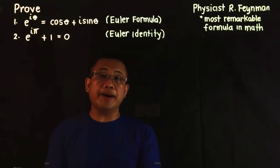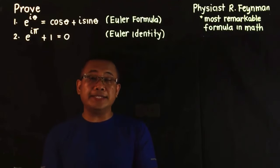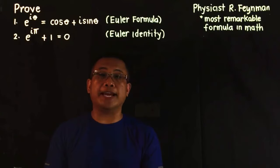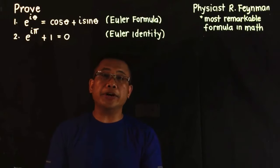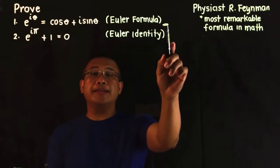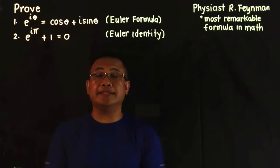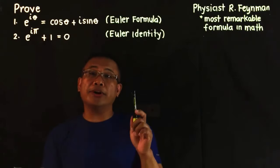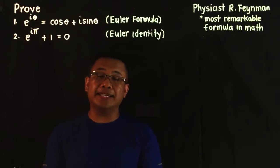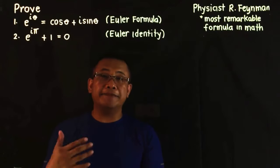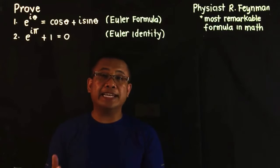Hi everyone, my name is Lando Assisten and welcome back to Assisten in German Academy. In this lesson we are going to talk about the Euler formula and the Euler identity. This Euler formula and Euler identity are ubiquitous in mathematics, especially in physics and in electrical engineering.